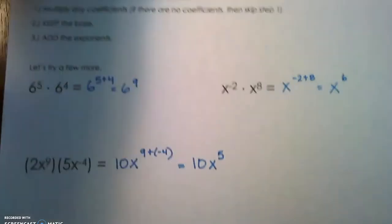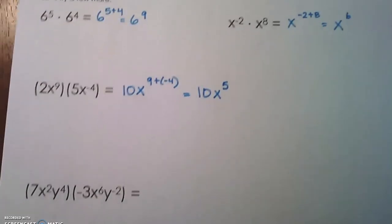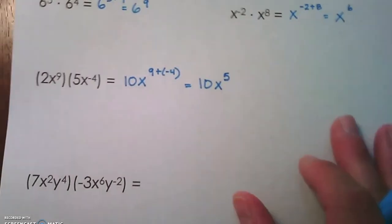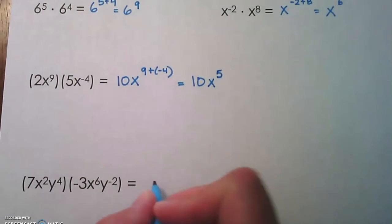Last one, we have two different bases, two different variables. We're going to multiply the 7 and the negative 3 because those are coefficients. That gives us negative 21.